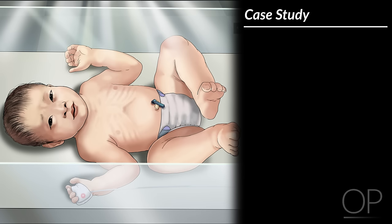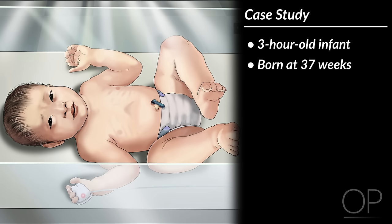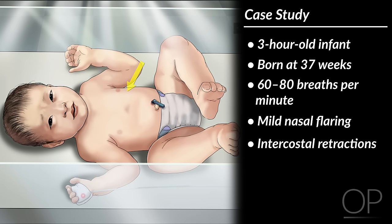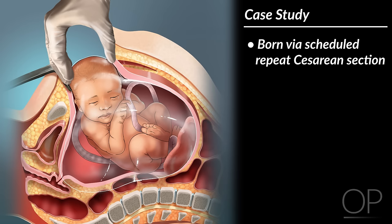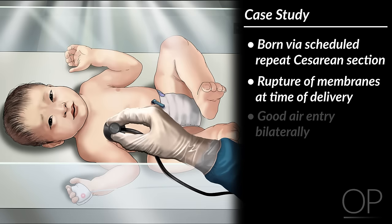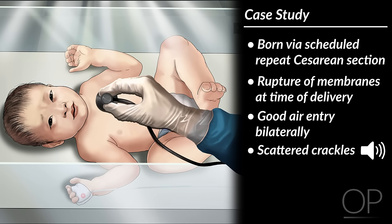Case study: You arrive at the warmer and see a three-hour-old infant, born at 37 weeks. He's breathing 60 to 80 breaths per minute with mild nasal flaring and intercostal retractions. Pulse oximetry is reading 90% on room air. His mother was negative for group B strep, and the infant was born via scheduled repeat cesarean section with rupture of membranes at the time of delivery. On auscultation, he has good air entry bilaterally, but scattered crackles are appreciated.